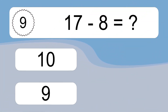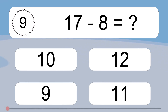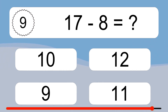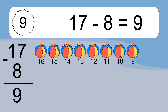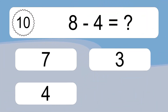17 minus 8 equals what? 17 minus 8 equals 9. Let's count it: 16, 15, 14, 13, 12, 11, 10, 9.